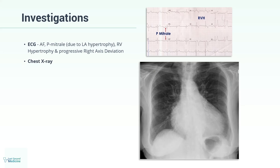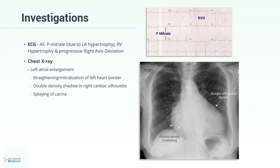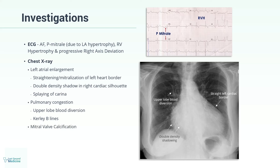Chest X-ray may show typical features of mitral stenosis. These include left atrial enlargement leading to straightening or mitralization of the left heart border. You may also see a double-density shadow in the right cardiac silhouette and splaying of the carina due to left atrial enlargement. There may be pulmonary congestion evidenced by upper lobe blood diversion and Kerley B lines. Mitral calcification can sometimes be seen on X-ray, and in advanced cases there may be findings consistent with pulmonary hemosiderosis.